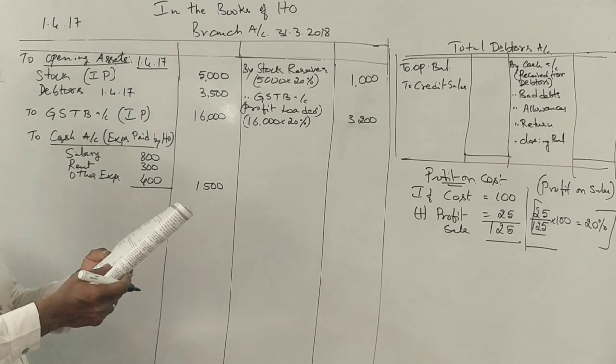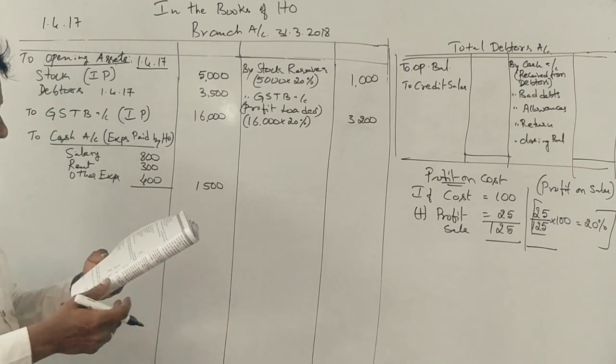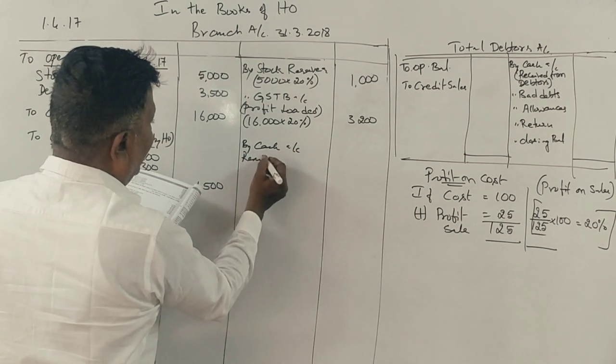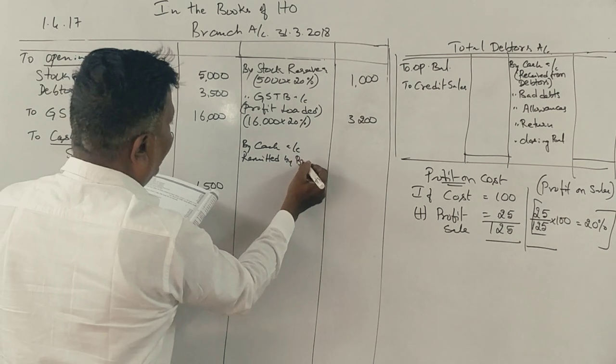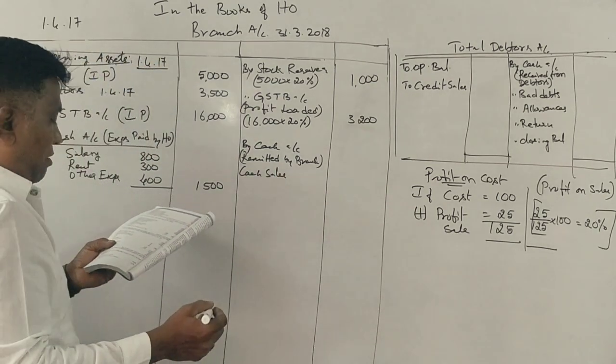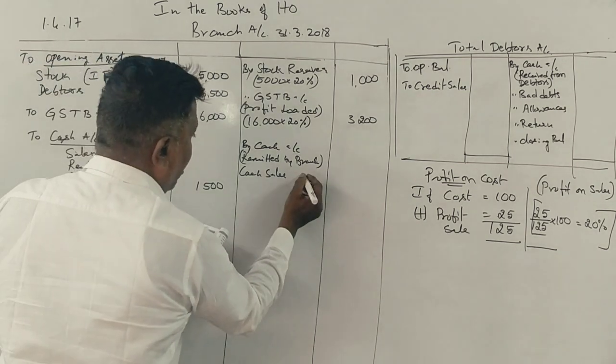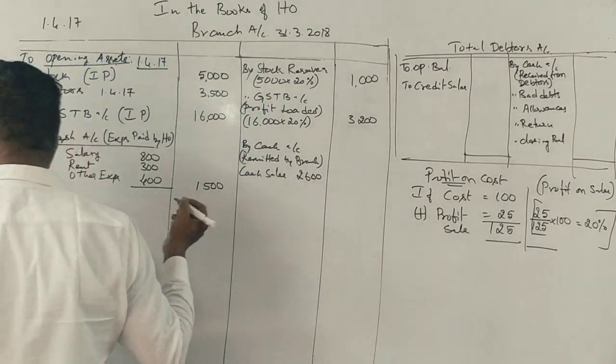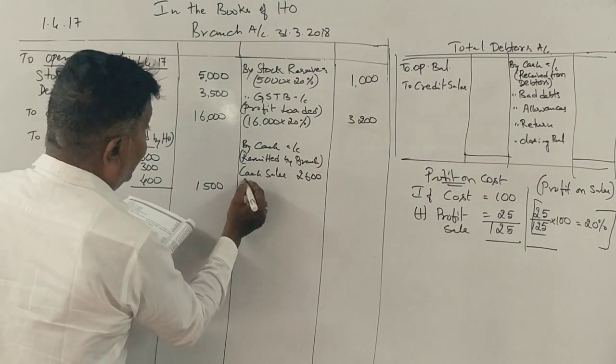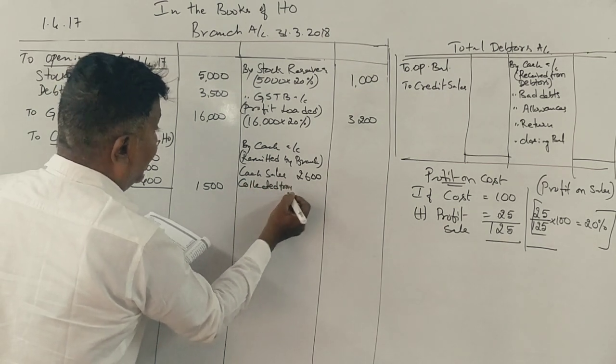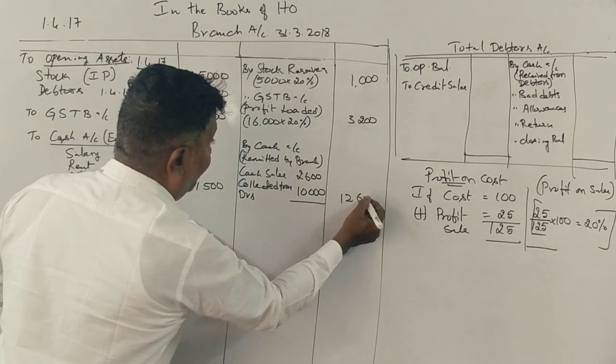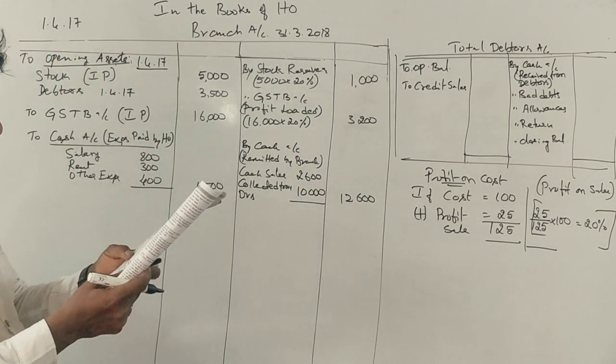Cash remitted by branch total amount 1,500. Cash remitted by branch to cash account: cash sales 2,600 rupees, collected from debtors 10,000 rupees. And the total remitted by branch is 12,600 rupees.